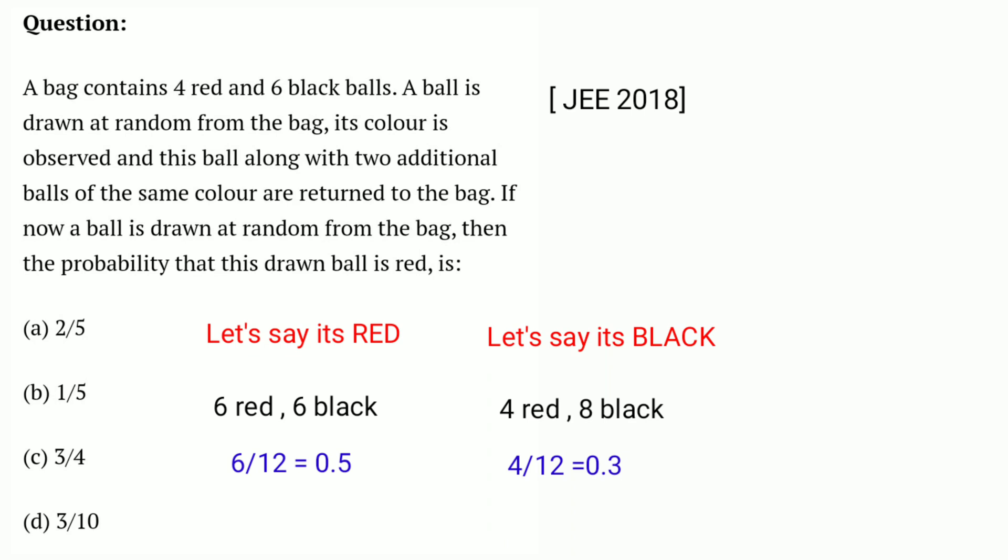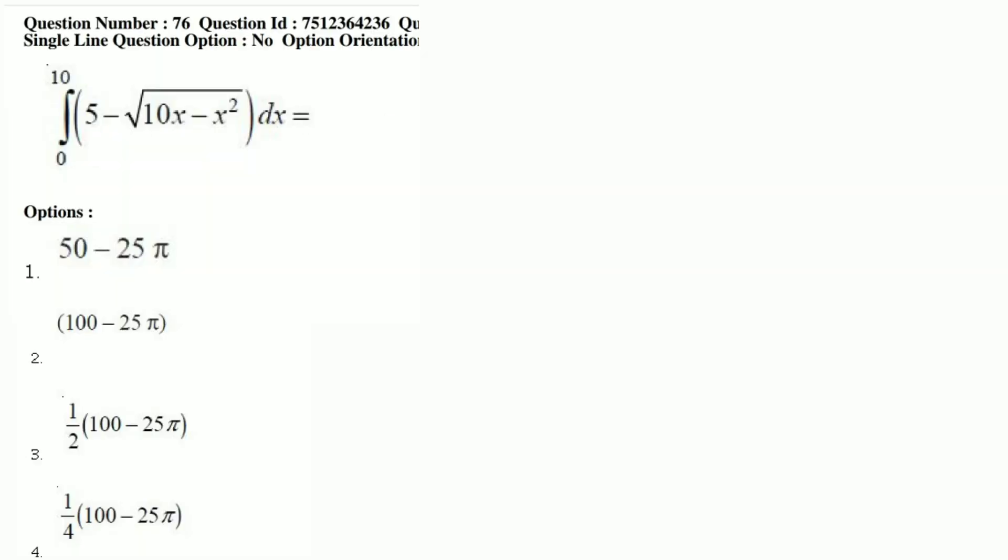Next, 1 by 5 is 0.2, which is less than 1 by 3, so this is not correct. Next, 3 by 4 is 0.75, which is greater than 0.5, so not correct. Next, 3 by 10 is 0.3, which is less than 0.33. So 2 by 5 is the only option between 1 by 3 and 1 by 2. If you don't want to use this method, you have to calculate the exact values.